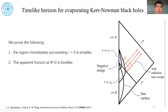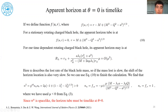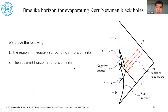The summary of our technical result is: the region immediately surrounding r equals zero is timelike, and the apparent horizon at theta equals zero is also timelike. Our proof holds for both the inner and outer apparent horizons. Since the outer apparent horizon is timelike, if you have matter or information following null radiation, it can escape the evaporating black hole. So when the black hole begins to evaporate — for example, due to Hawking radiation — the horizon will become timelike, and matter following a null-like path can escape the black hole.